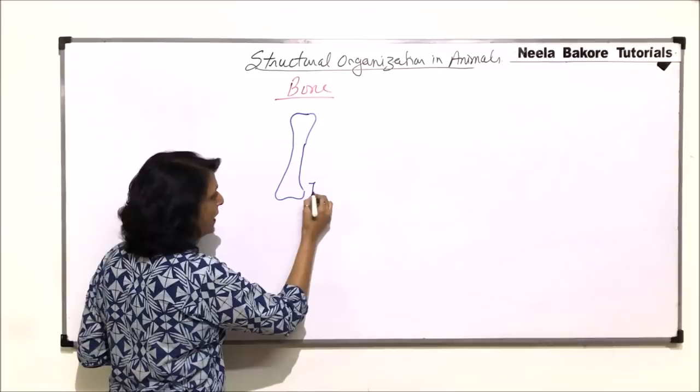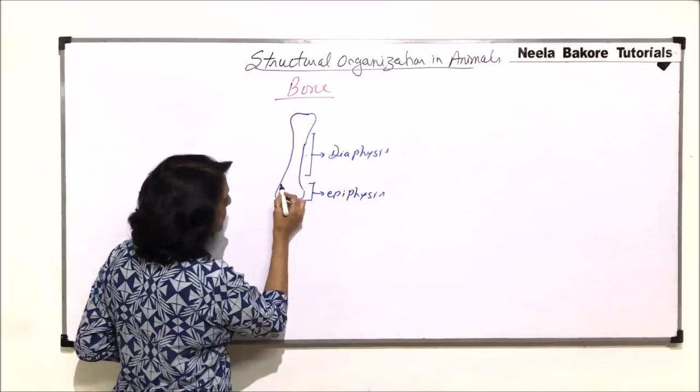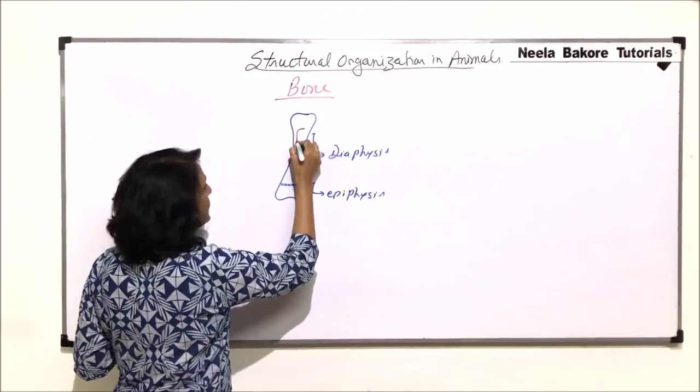The head part is known as the epiphysis and the shaft part is known as diaphysis. In between, there is this zone of growth where bone elongation takes place.